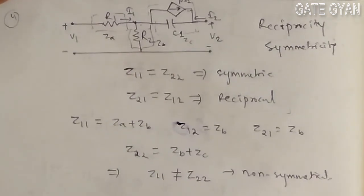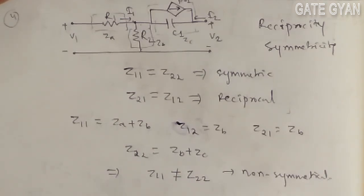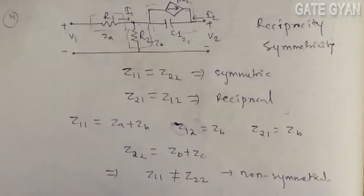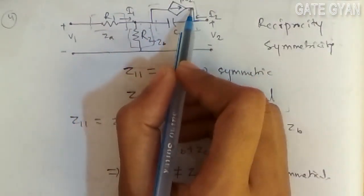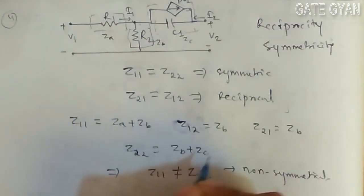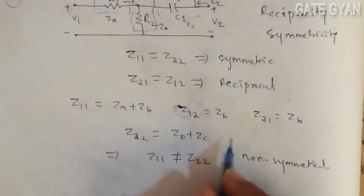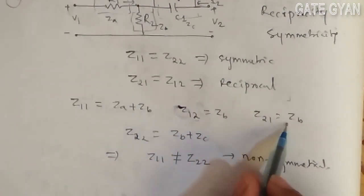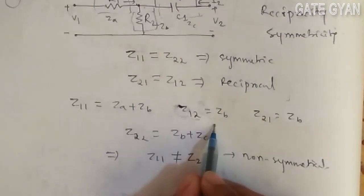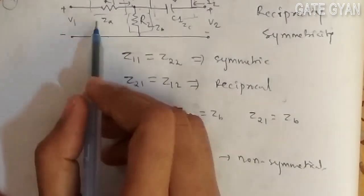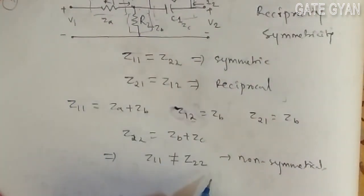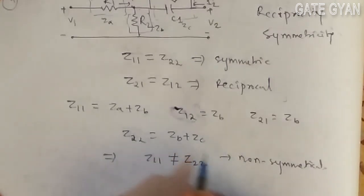When we talk about reciprocity, a network cannot be reciprocal when a dependent source is present in the circuit. From the formula, z12 and z21 appear to be equal, but when we solve for all the z-parameters, we will see that the network is not reciprocal.